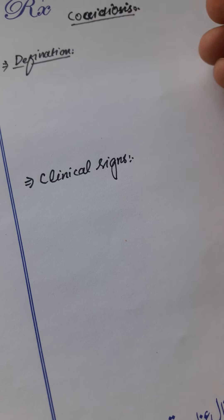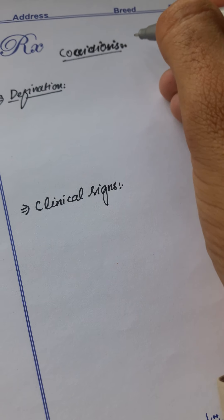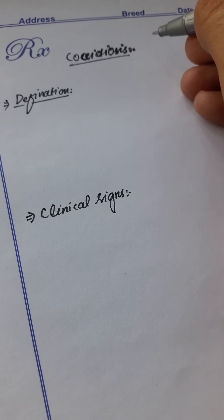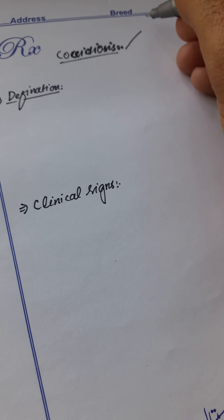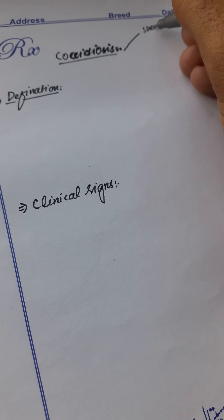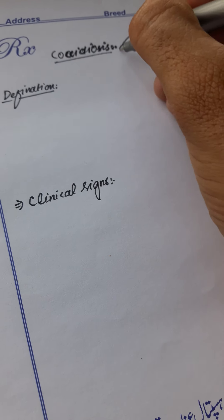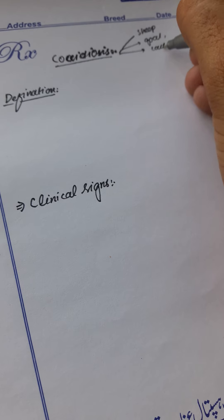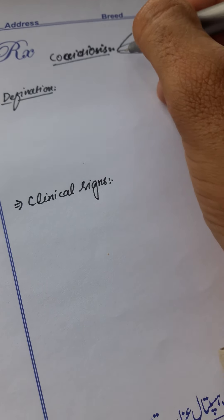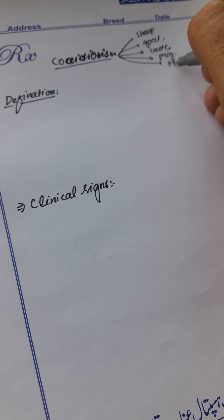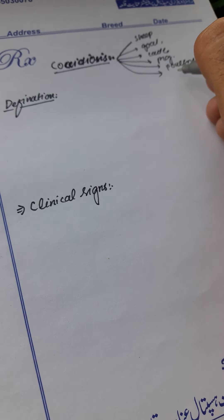Hi friends, I am Dr. Simi with a new topic: coccidiosis. Coccidiosis is an economically important disease of sheep, goat, cattle, pig, poultry, and also rabbit.